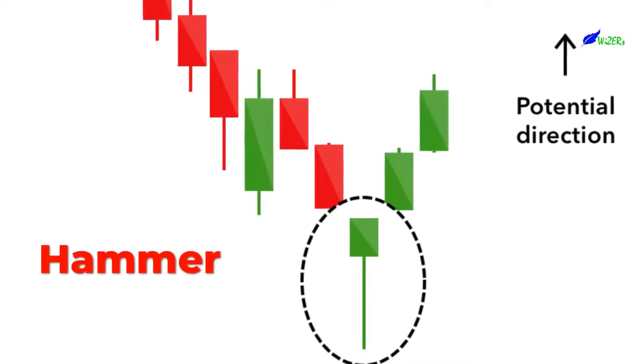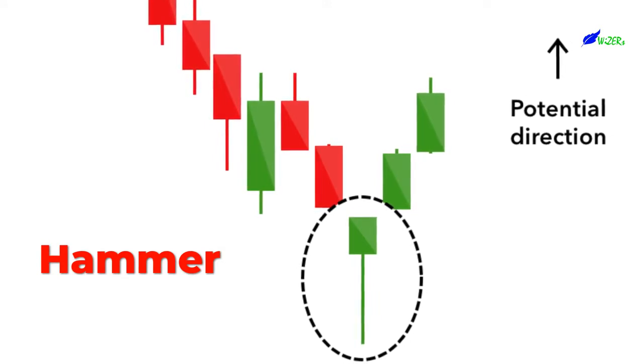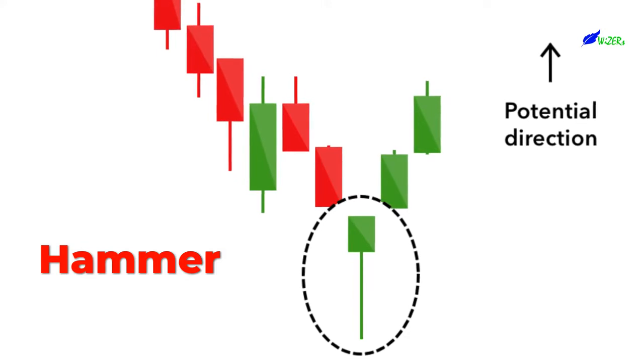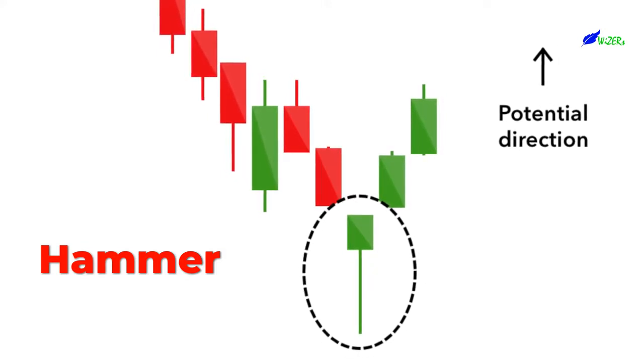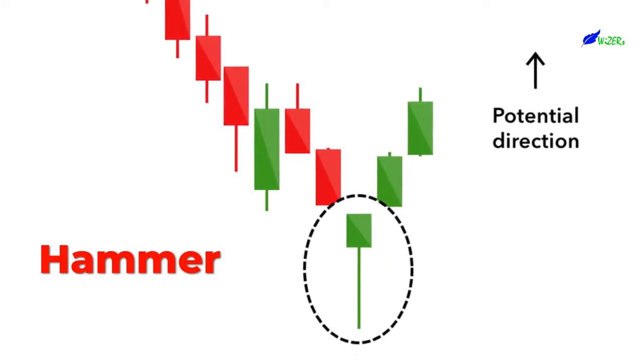The hammer candlestick pattern is formed of a short body with a long lower wick, and is found at the bottom of a downward trend. A hammer shows that although there were selling pressures during the day, ultimately a strong buying pressure drove the price back up. The color of the body can vary, but green hammers indicate a stronger bull market than red hammers.